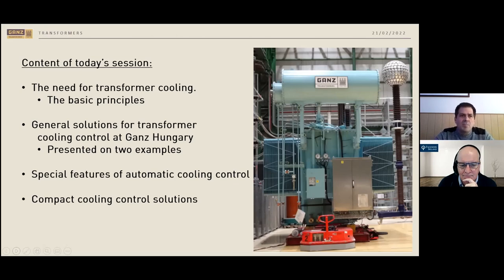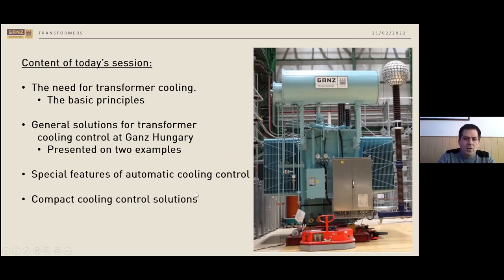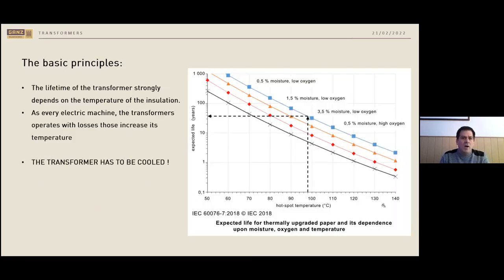The duration of my presentation is planned to be about 40 minutes, and in the last 20 minutes I will try to answer your questions. Whatever cannot be answered today will be answered offline by email in the following days. So why is cooling needed for transformers? On this slide you can see a graph where the expected lifetime is shown versus the operating temperature — the highest temperature spot of the winding. If the winding temperature increases by 10 degrees, the transformer lifetime drops to half.